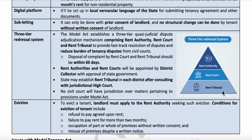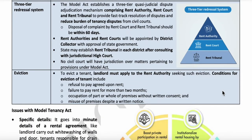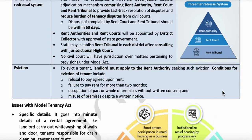The landlord cannot ask the tenant to vacate the residence as per his own wish. The landlord can apply to the rent authority under four conditions: first, if the renter fails to pay rent for more than two months or refuses to pay the agreed rent; second, if the tenant misuses the premises; third, if they use the residence more than prescribed — then the landlord can apply to the rent authority to vacate the house.